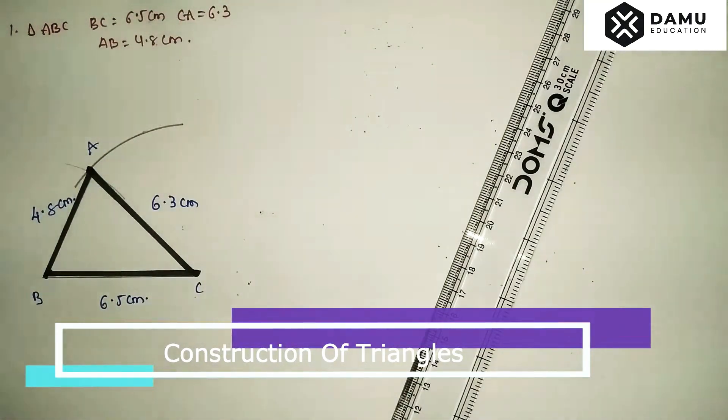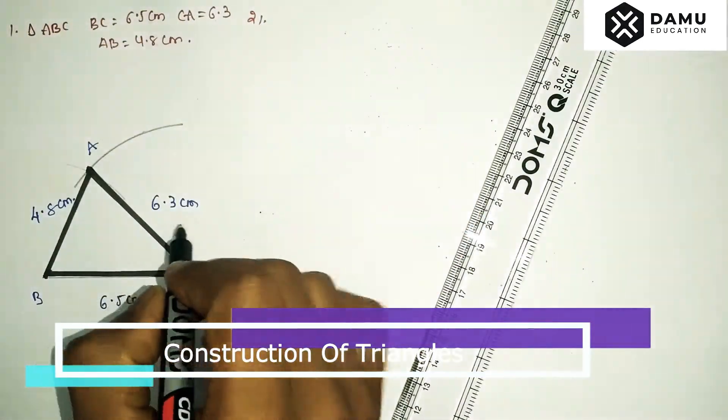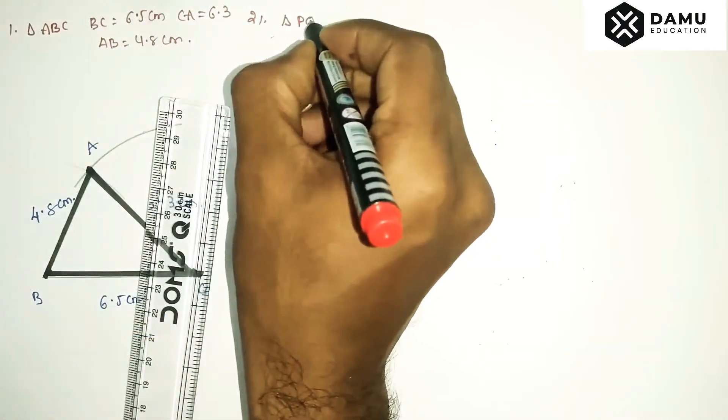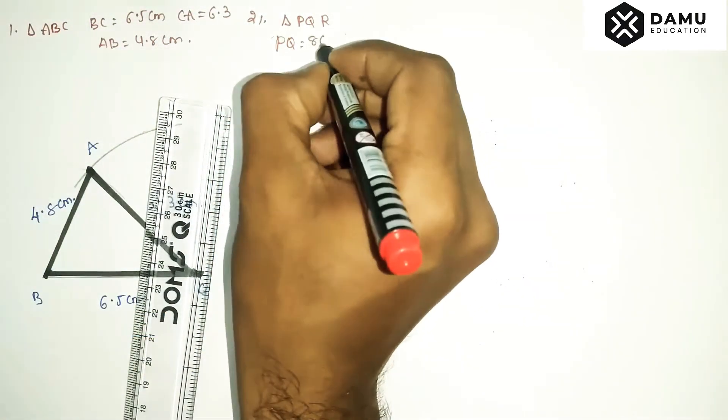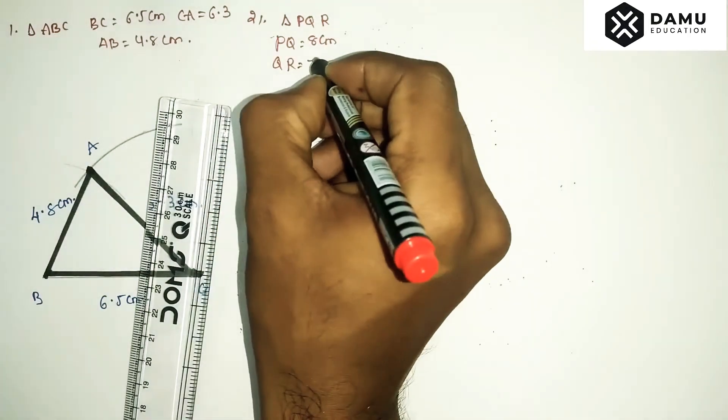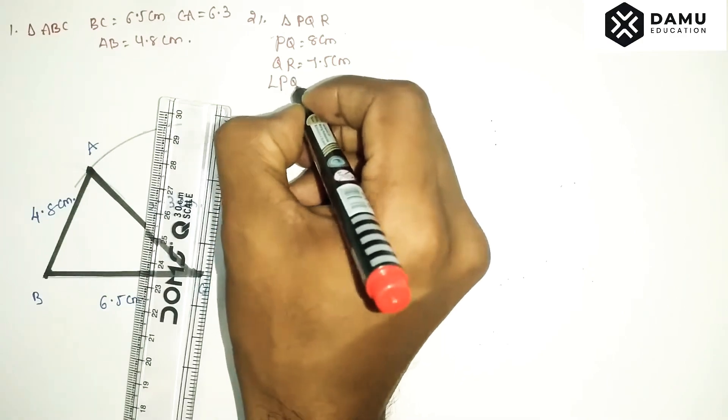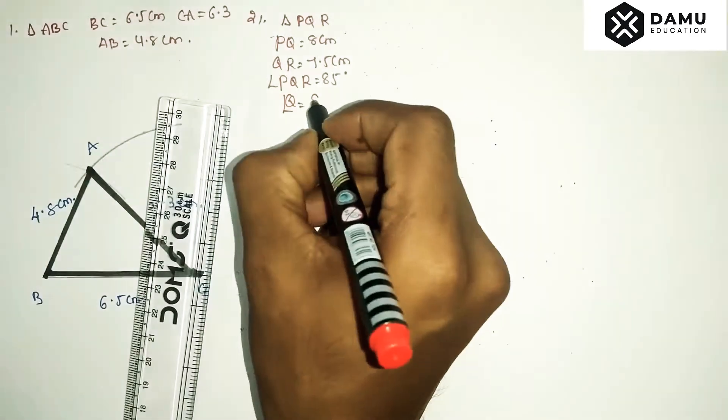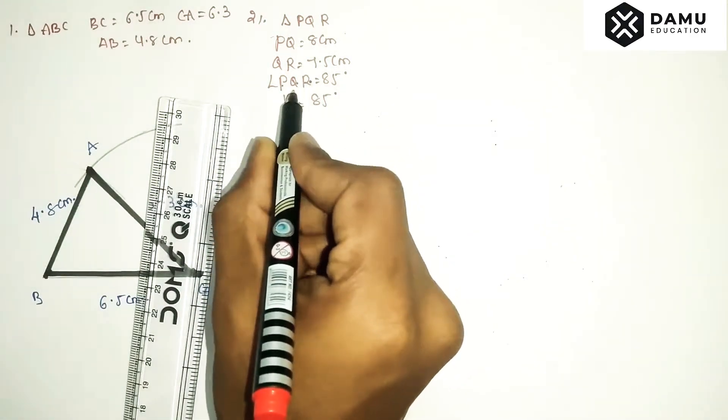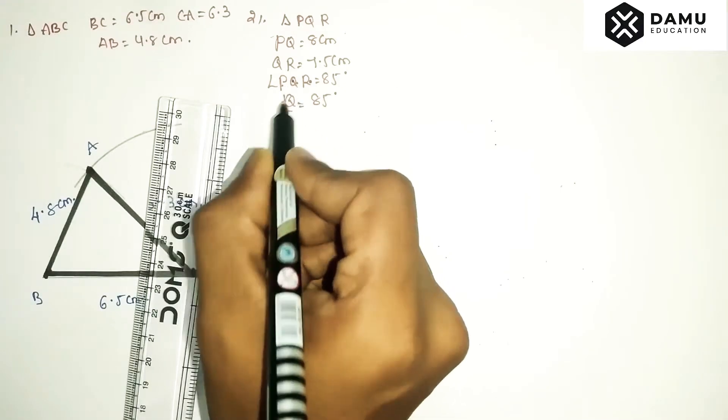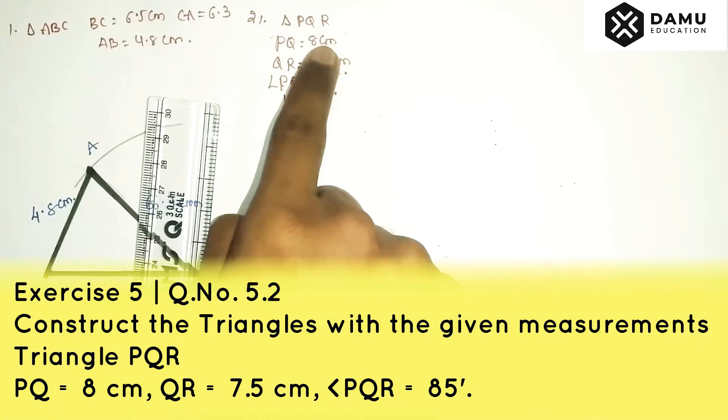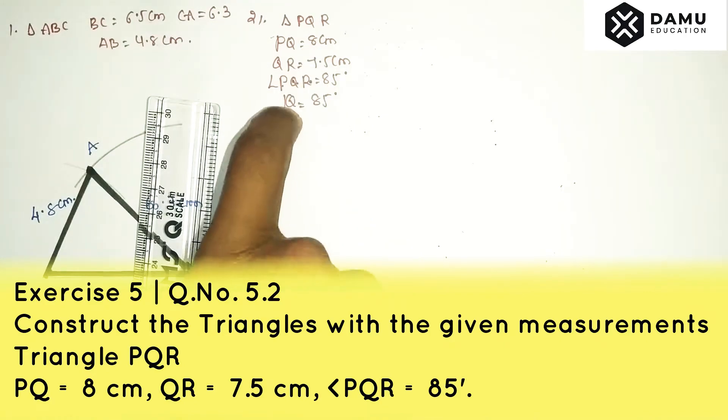Our next question is triangle PQR where PQ equals 8 cm, QR equals 7.5 cm, and angle PQR equals 85 degrees. That is angle Q equals 85. PQR means the middle vertex is the angle. Since angle Q is given, we can draw line segment PQ first.